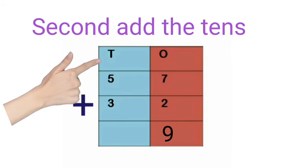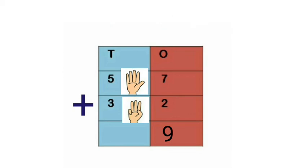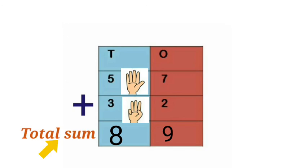Next we add the 10's place: 5 plus 3. Put 5 on the fingers, next 3 on the fingers. Count on from 5: 6, 7, 8. So the total sum is 89.